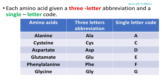Each amino acid is given a three-letter abbreviation and a single-letter code. In nomenclature, amino acids are sometimes represented by a three-letter abbreviation, and in research papers a single-letter code is used. For example: alanine is represented by A, cysteine by C, asparagine by N, aspartate by D, phenylalanine by F, and glycine by G.